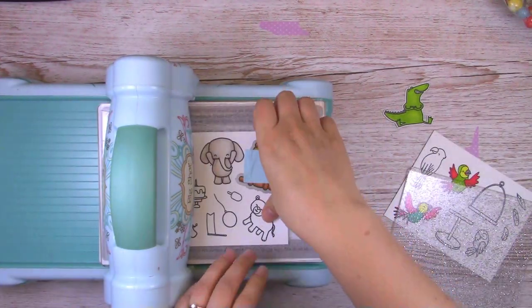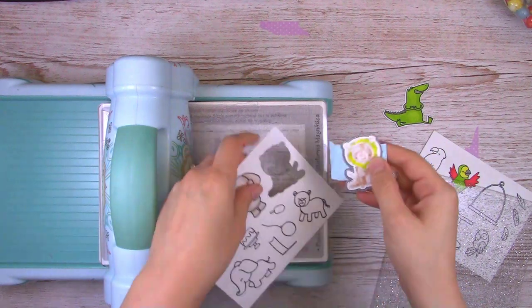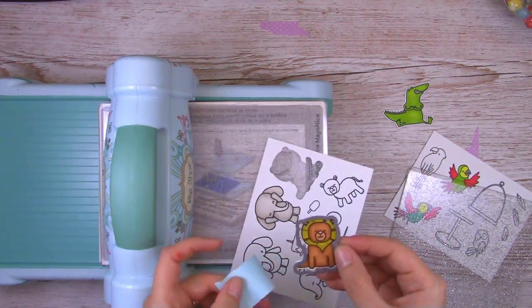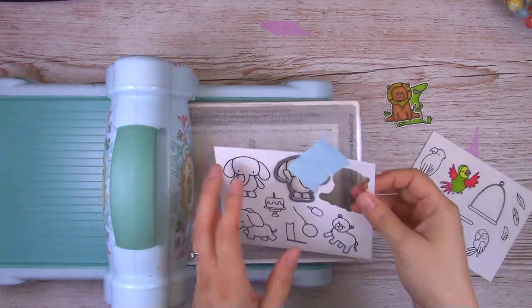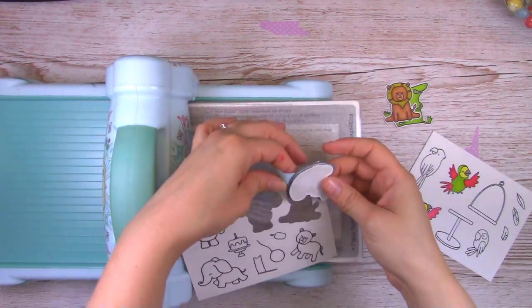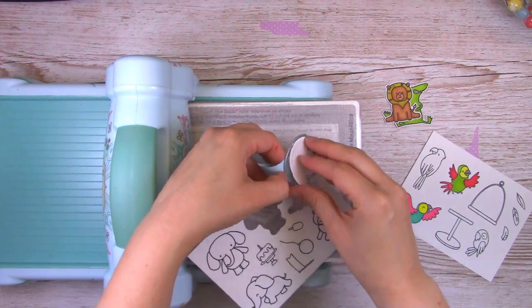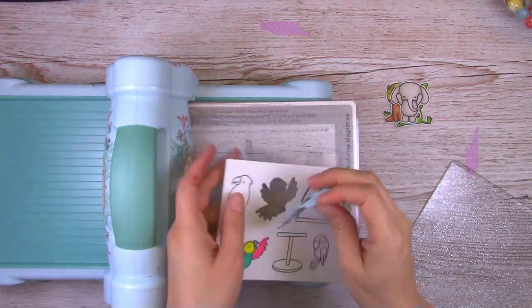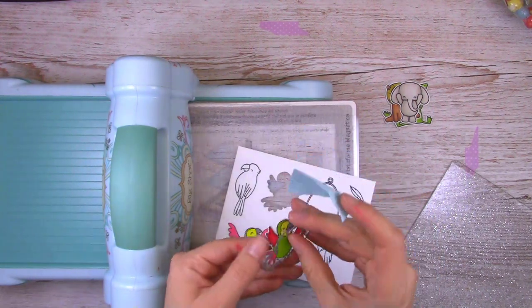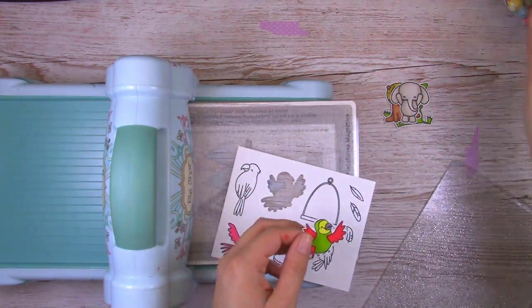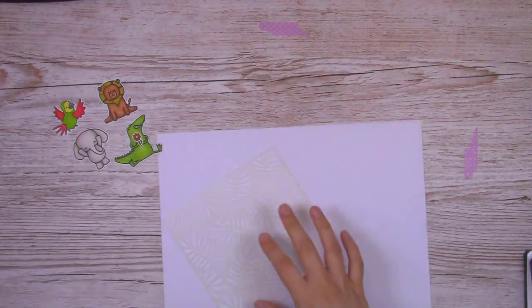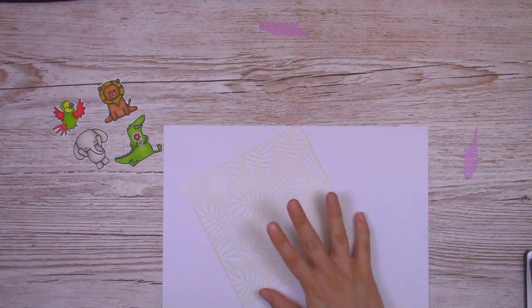So there's my little Croc. He's cute. Then I ran my little elephant of surprise through my die cutting machine. Oh, sorry. I did the lion first, then the elephants, and last but not least, that stunning little parrot there, green and red.